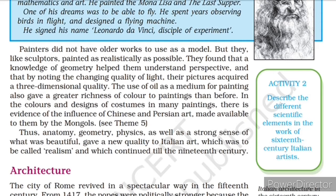Painters had no older works to use as models, but like sculptors, they tried to draw realistic paintings. They could understand perspective with a knowledge of geometry. Perspective is about how the center part of an image looks smaller and as it extends outward it becomes larger or wider — giving the look of a road going far into the distance. Artists studied all this perspective with the help of geometry.